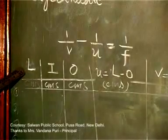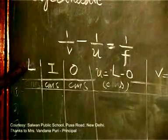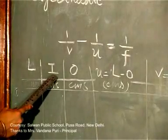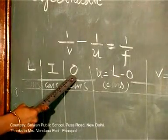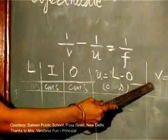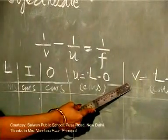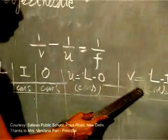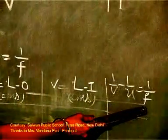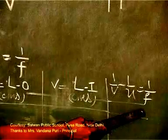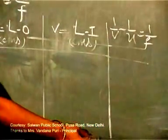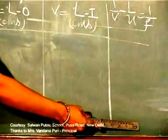Every time you take an observation, you will be maintaining the same value of lens position. By adjusting the image and object needle, you will get different values of object and image distance. Using these two values and applying the lens formula, you will be able to find the focal length. This is the analytical method of finding focal length by taking the average.